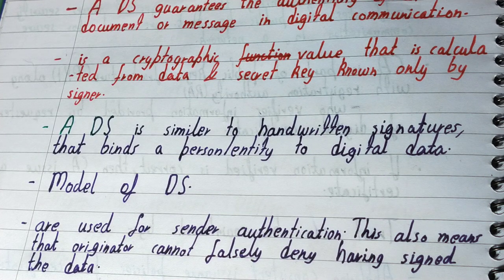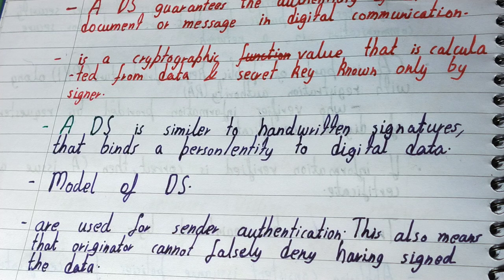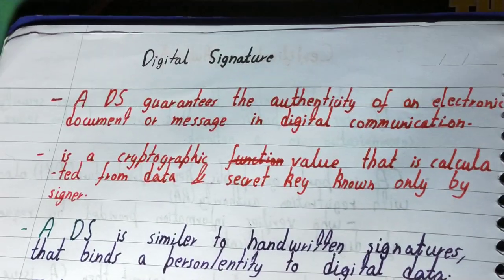The private key encrypts the data and the public key decrypts it. It works by generating a hash value, encrypting it with the sender's private key, and sending it along with the data as the signature. At the receiver's end, data and signature are separated; the signature is decrypted using the sender's public key, and hash values from both the signature and the data are compared. If they match, the digital signature is verified.